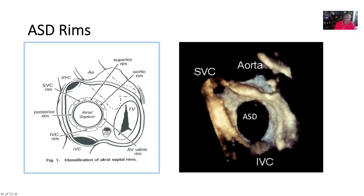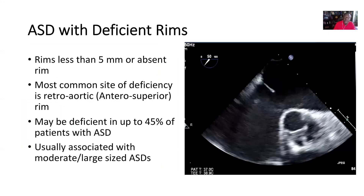Here we have a 3D on-face view of an ASD showing the relationship of the aorta, the SVC, and the IVC with what looks to be a fairly large-sized defect. You will define an ASD with deficient rims as rims of less than five millimeters or absent rims. As shown in this still frame, we have a large-sized ASD and there's a deficient retro-aortic rim.